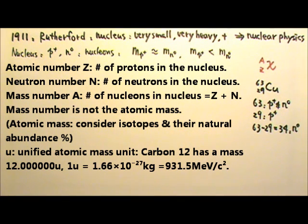The little u is unified atomic mass unit. Its definition is that a carbon-12 has a mass of 12.000000u. So 1u would equal to 1.66 times 10 to the negative 27th kilograms, which is also 931.5 MeV over C squared.